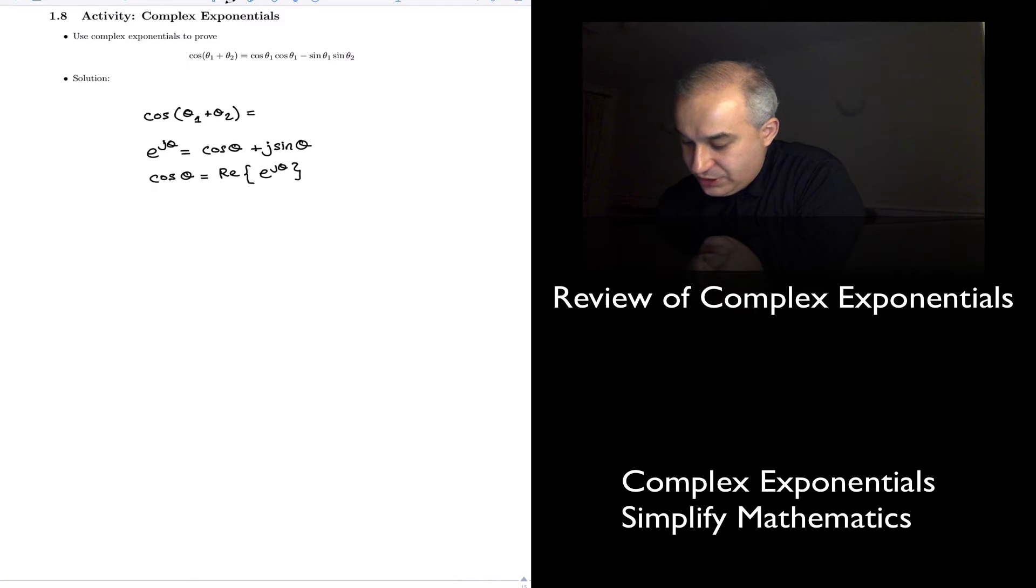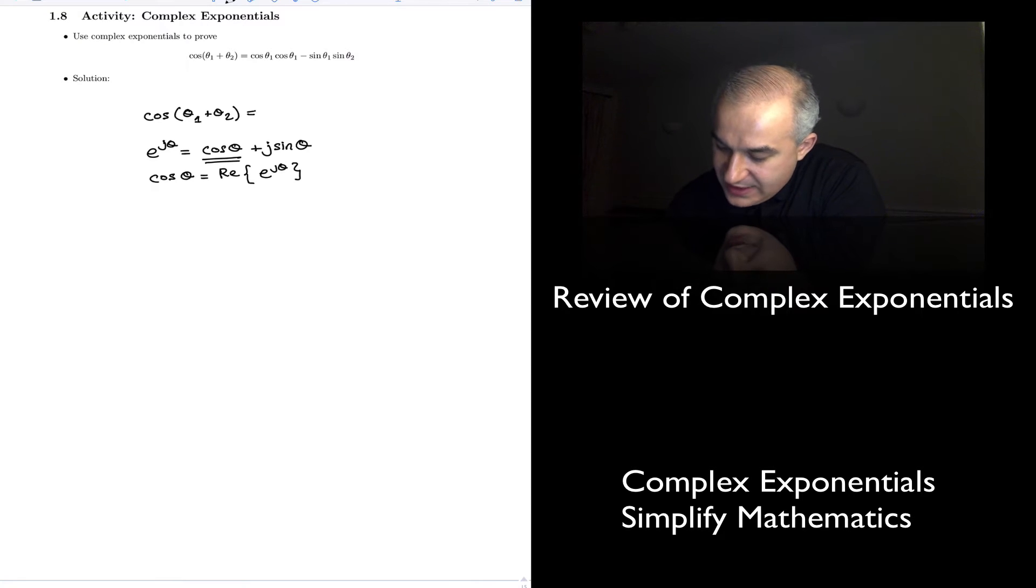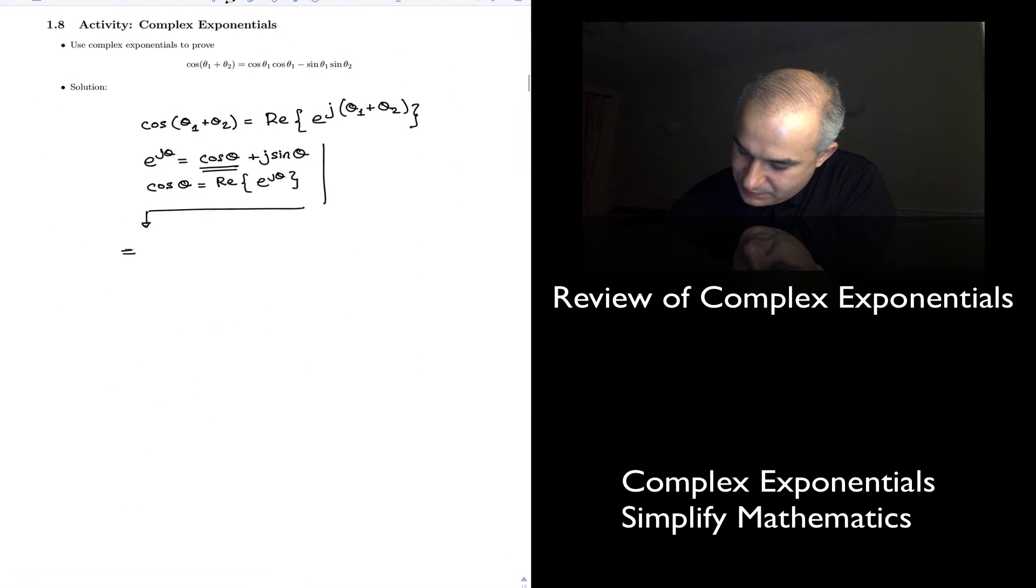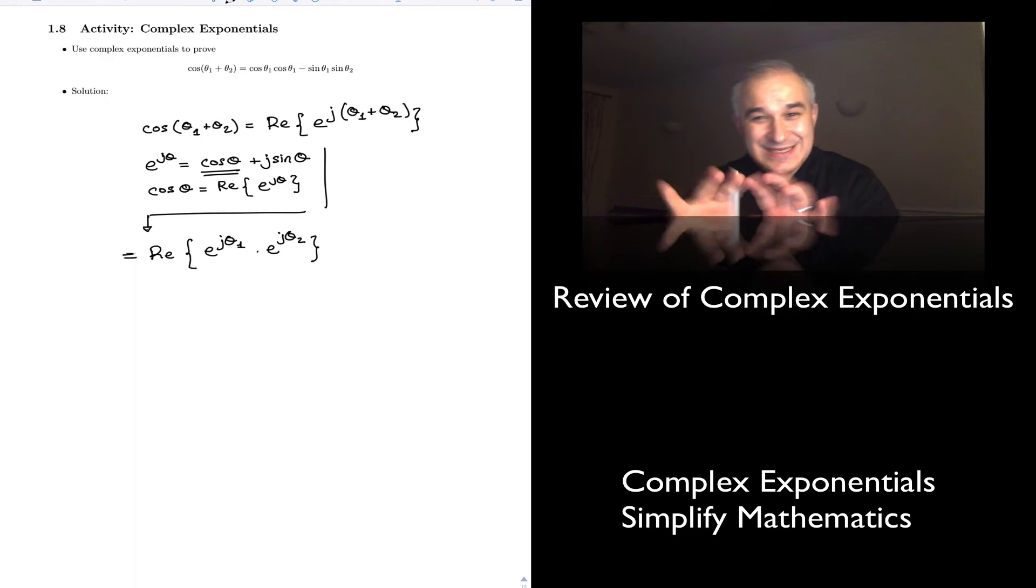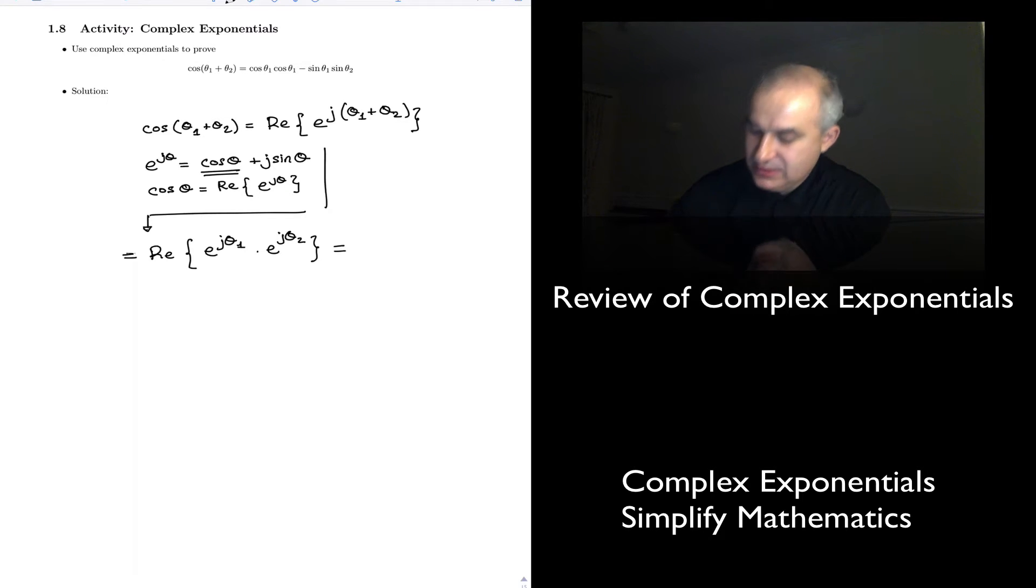So real of e to the j theta 1 plus j theta 2. And this is what you cannot do with cosines, but you can do with exponentials. You can separate things. And so with this, once you have done this step, which is what was intractable, what is the addition?